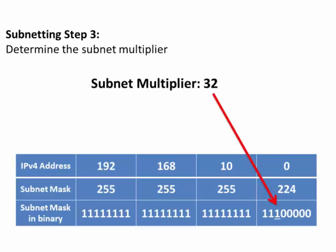In Step 3, we need to determine our subnet multiplier. The subnet multiplier, or magic number, will be the last one in the subnet mask. If we count the ones from left to right, the last one is in the 32s place. The binary place values start at 128, 64, 32, 16, 8, 4, 2, 1 — decreasing by half each place value. So the subnet multiplier is 32.